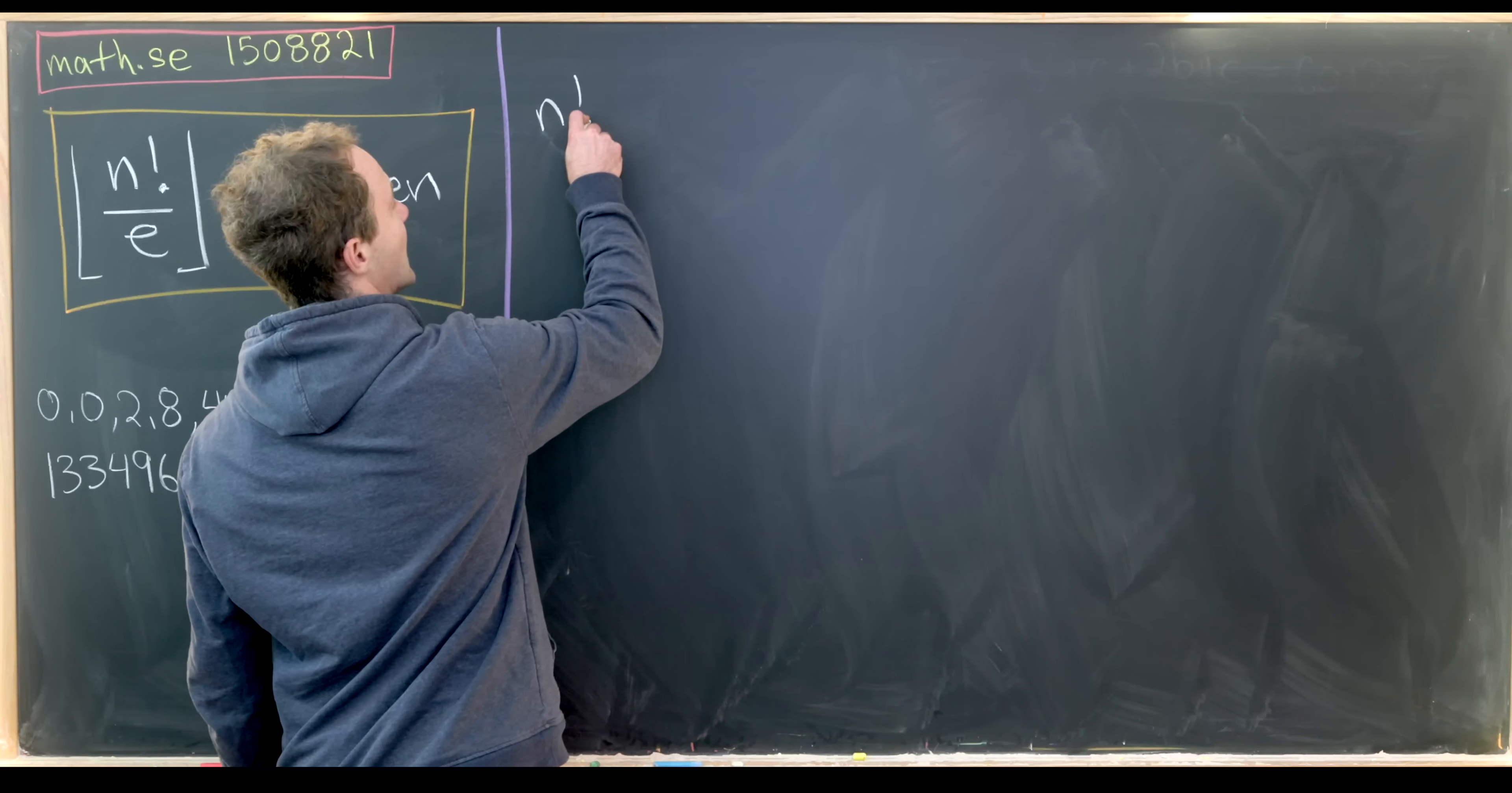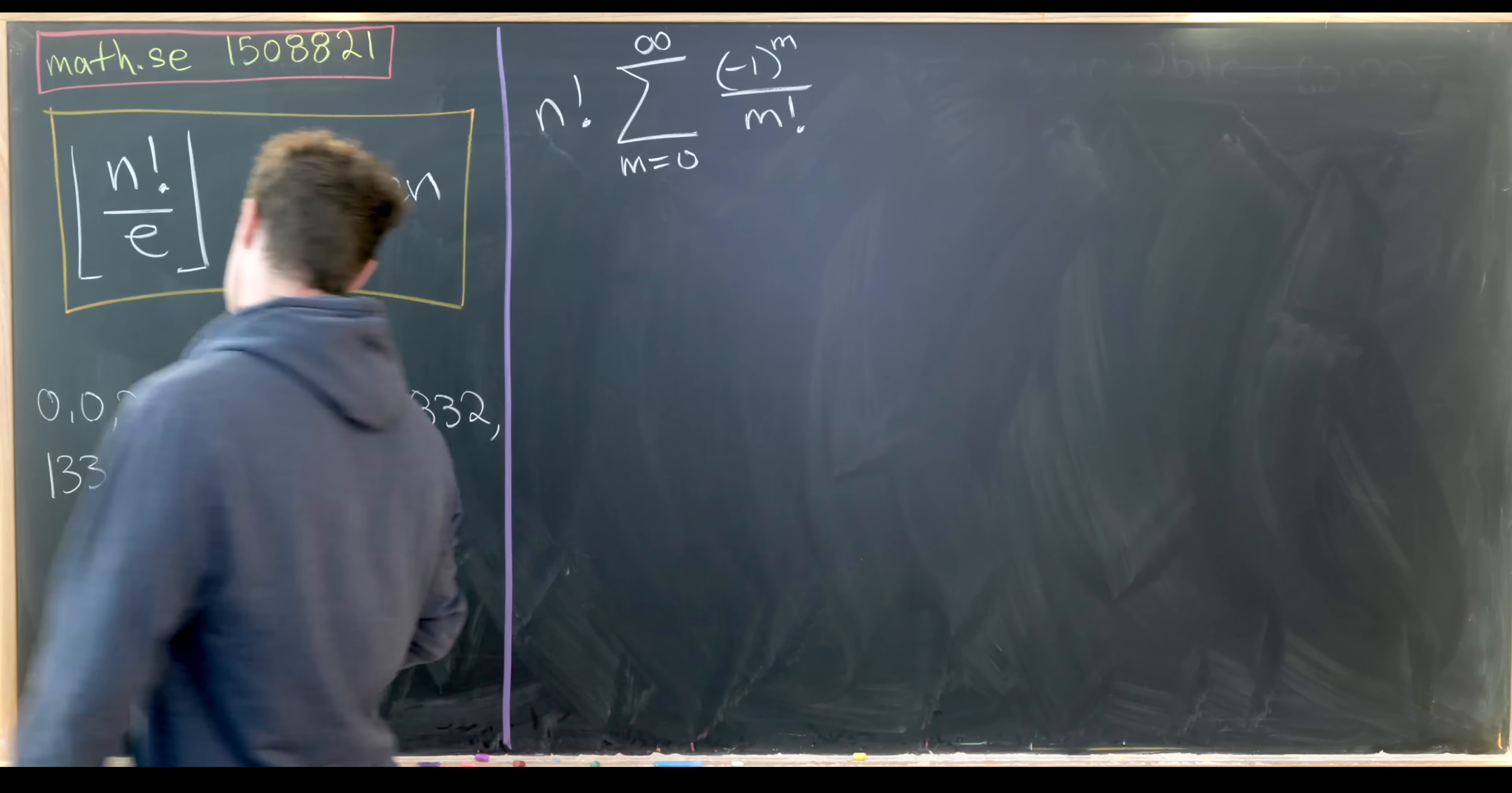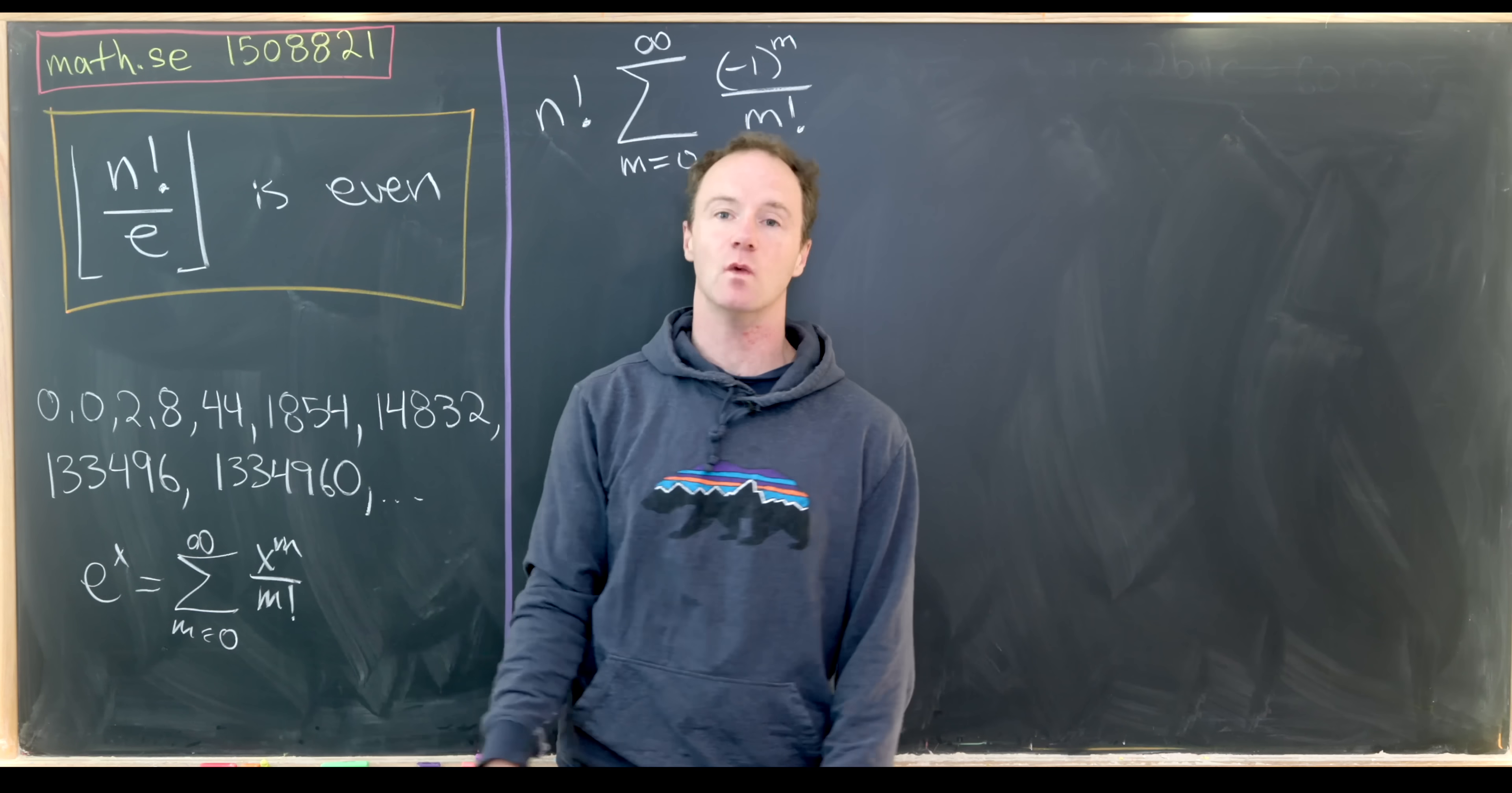Let's start with n factorial times 1 over e, but I'll rewrite 1 over e in its series expansion. So that'll be the sum as m goes from 0 to infinity of minus 1 to the m over m factorial. And that's using this series expansion formula for e to the x, which is the sum as m goes from 0 to infinity of x to the m over m factorial, where here we're just taking x to be negative 1.